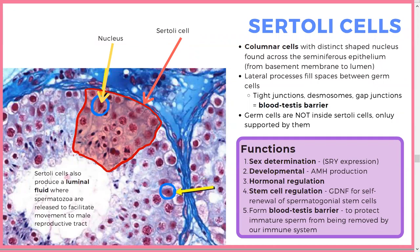These tight junctions form the blood-testis barrier — like the blood-brain barrier, but for the testes. Sertoli cells are columnar and have lateral processes. Germ cells are not inside Sertoli cells, just supported by them. Functions of Sertoli cells include: sex determination via SRY expression, development including anti-Müllerian hormone production, hormonal regulation via testosterone receptors that initiate spermatogenesis, and stem cell self-renewal.